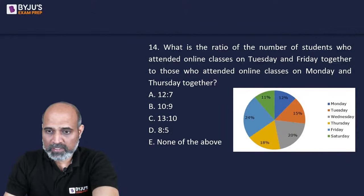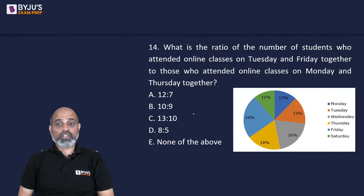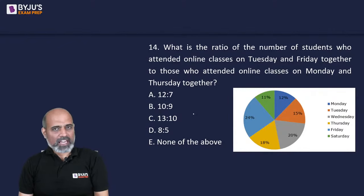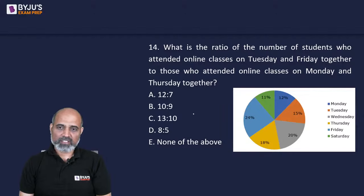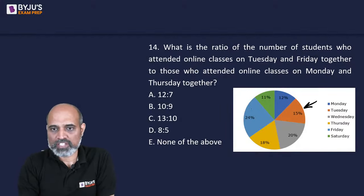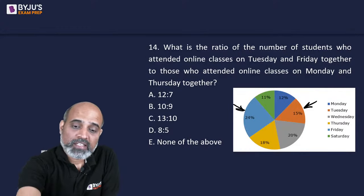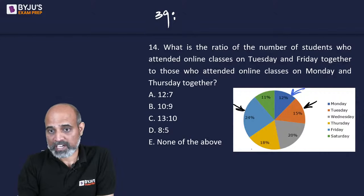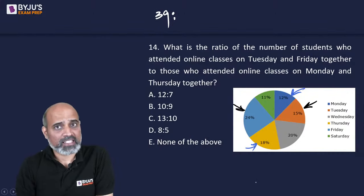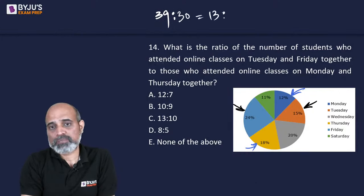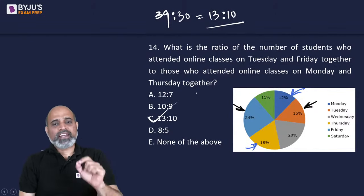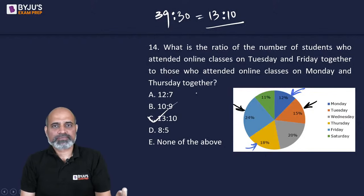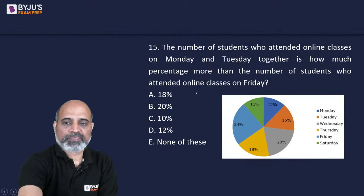Next: ratio of students on Tuesday and Friday together to students on Monday and Thursday together. Tuesday + Friday = 15 + 24 = 39%. Monday + Thursday = 12 + 18 = 30%. Since the base (2500) is the same for all, the ratio is simply 39:30 = 13:10. When bases are equal, you can compare percentages directly without calculating actual values.